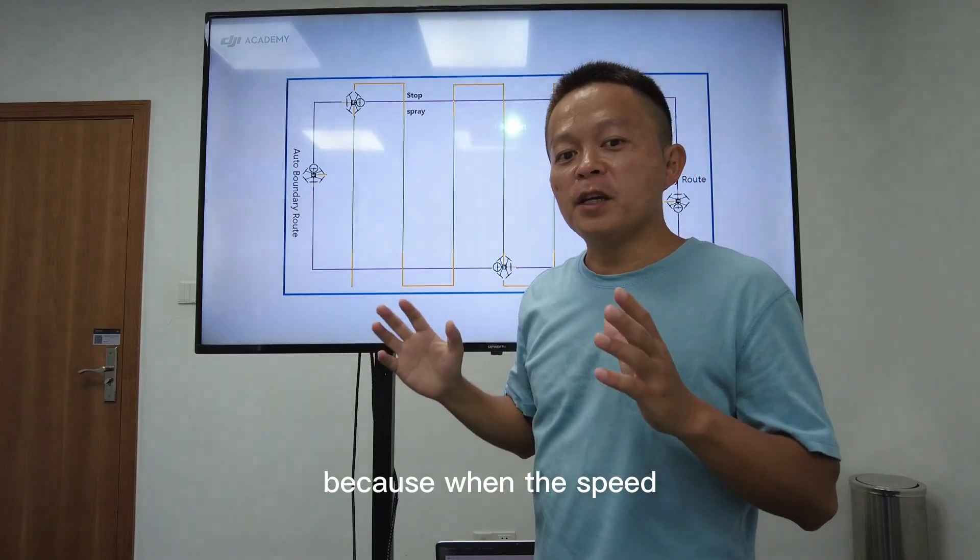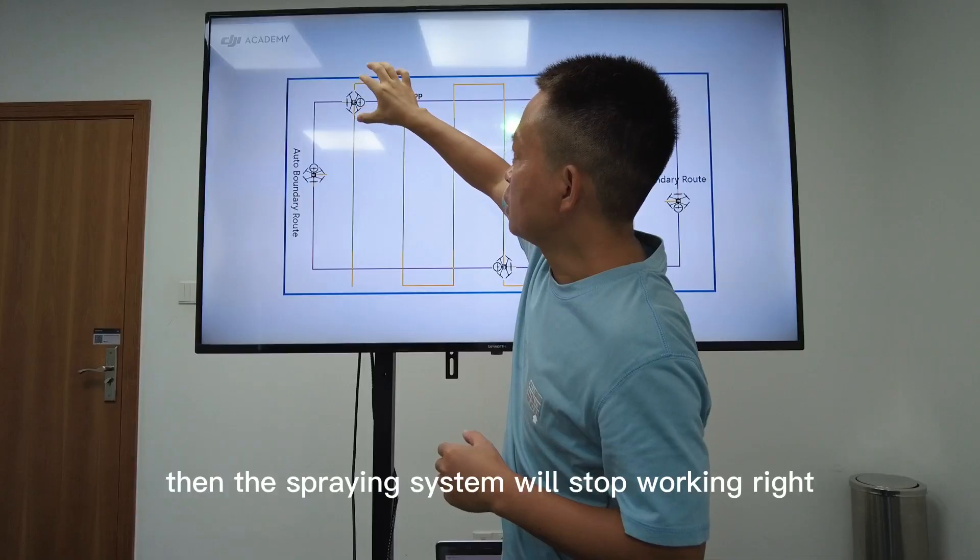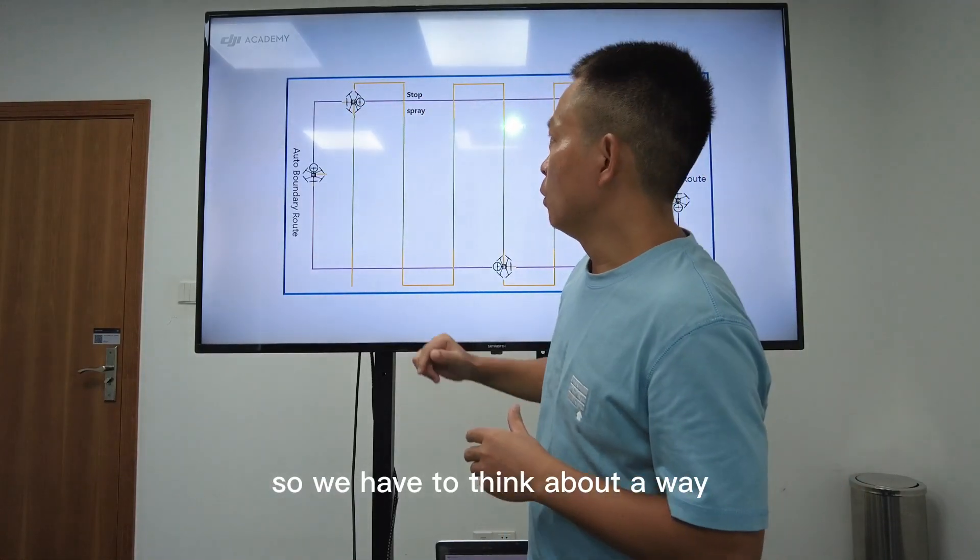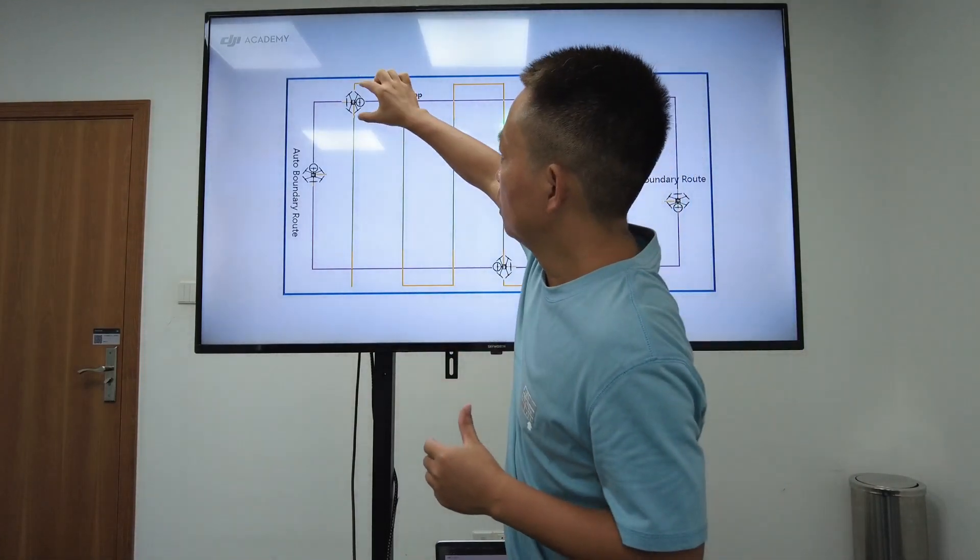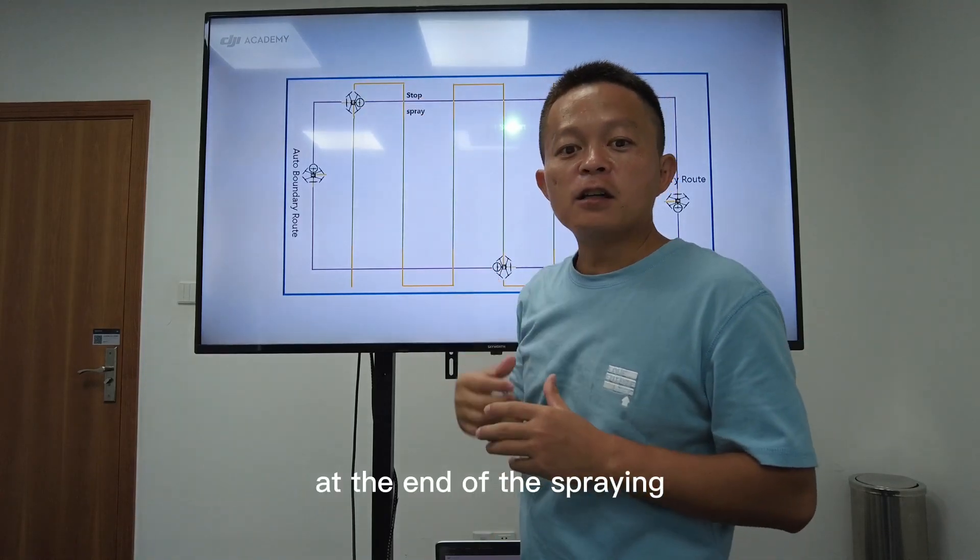Because when the speed increases or decreases, then the spray system will start working. So we have to think about a way to spray here again at the end of the spraying.